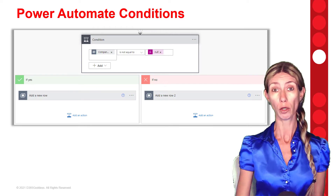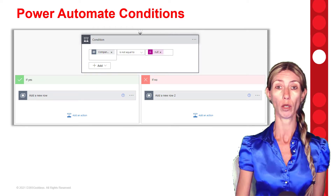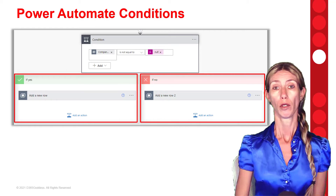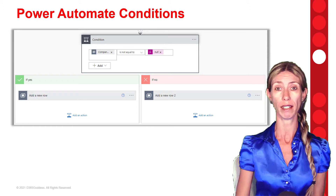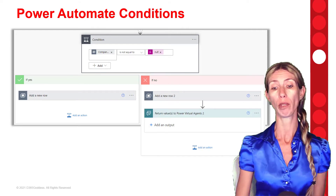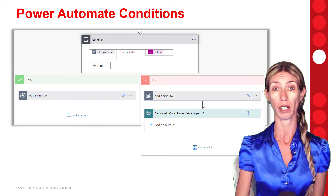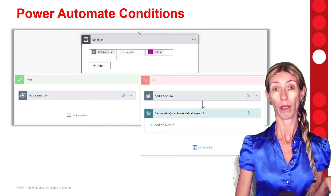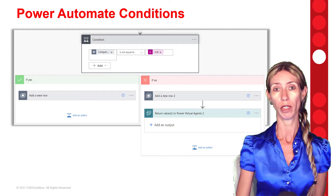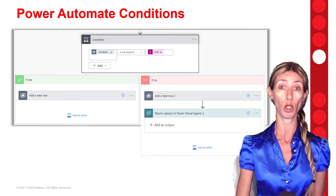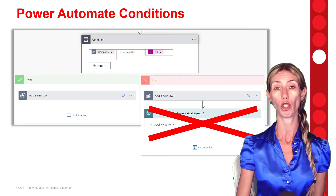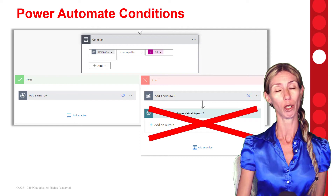Let me show you what I'm talking about. On the screen here you can see my condition and those two different outcomes — the if-yes path and the if-no path. In Power Virtual Agents, if we want to feed the data from any particular path back to Power Virtual Agents, we'd put a step in there to return those values, because what happens if the statement is true might obviously be different than if it's not. The problem is that if we try to add that return-values step, we're actually going to get an error and the system will not allow us to do that. I'm going to show you the best workaround for this.